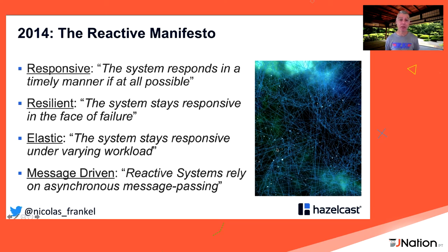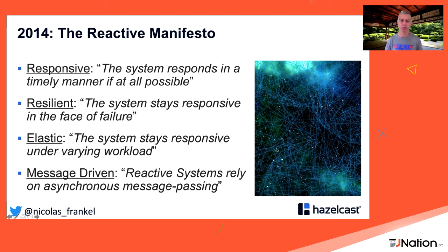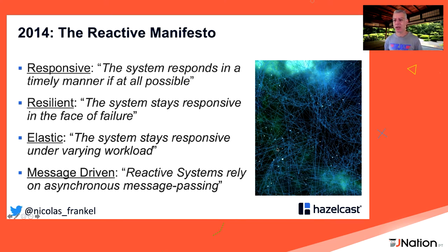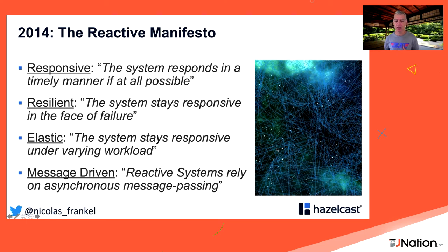Let's define what reactive is. The first time it was really defined was in the Reactive Manifesto. It states four properties: first, be responsive — be as fast as possible. Second, be resilient — even if something bad happens your system is not stuck. Third, be elastic — it scales nicely, ideally close to linearly. Fourth, it's message-driven — not by calling methods directly but through asynchronous message passing.